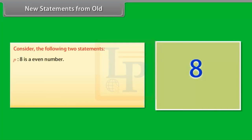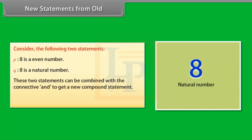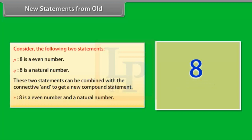Consider the following two statements: P — 8 is an even number; Q — 8 is a natural number. These two statements can be combined with the connective AND to get a new compound statement: R — 8 is an even number and a natural number.